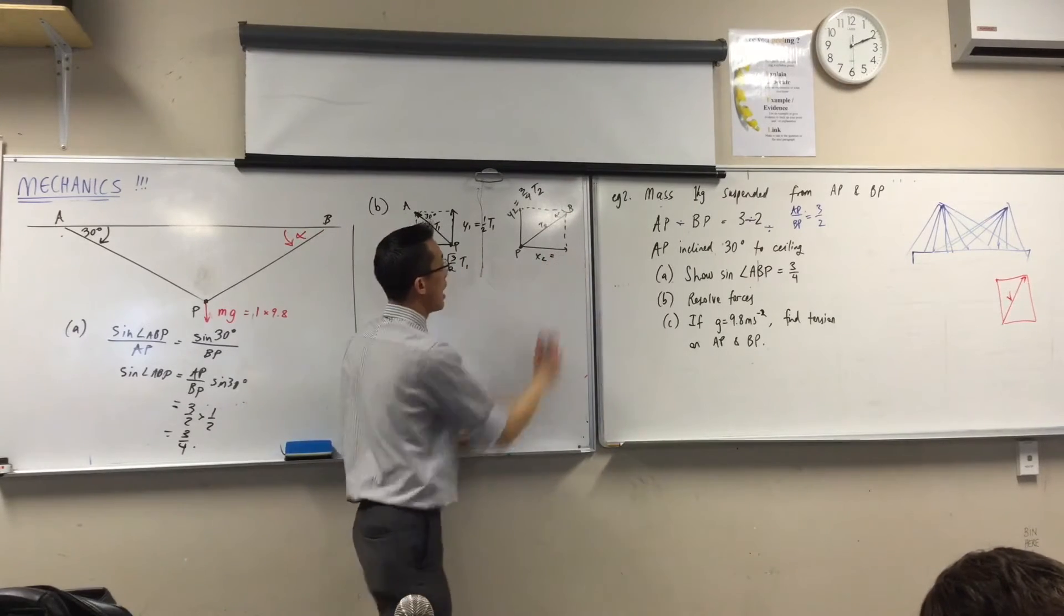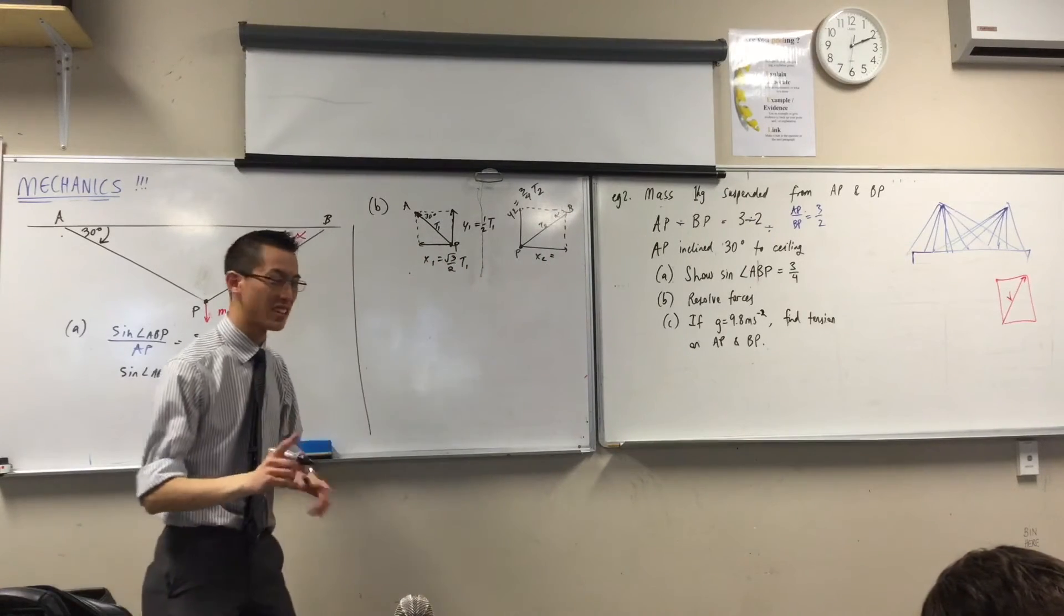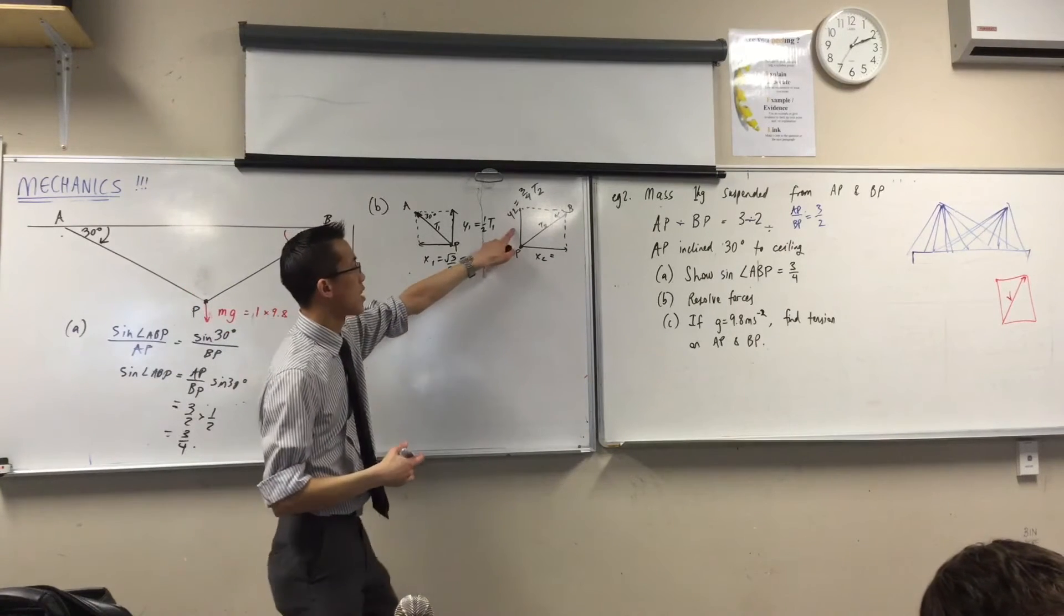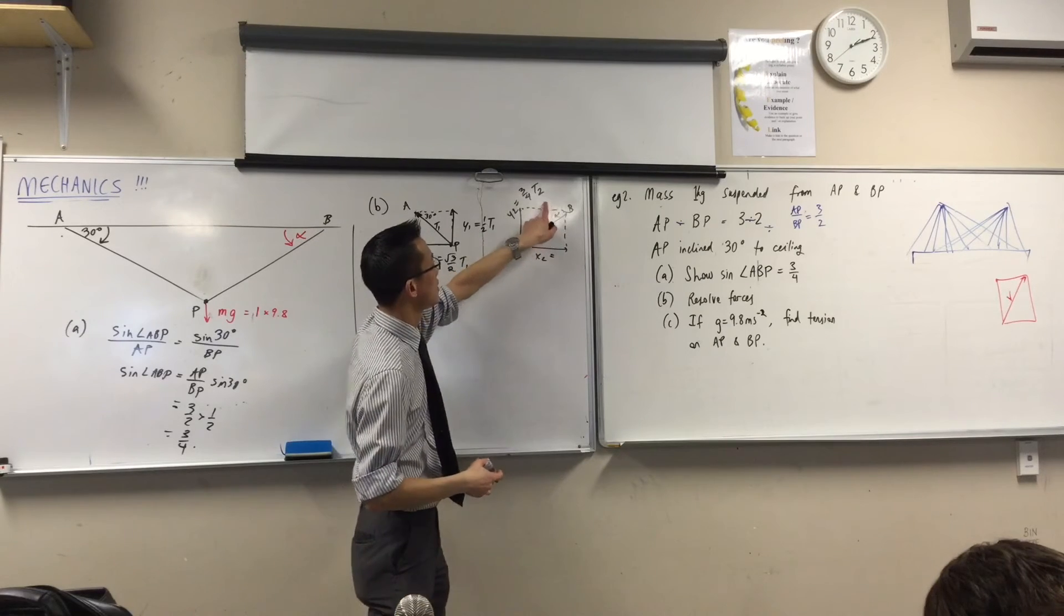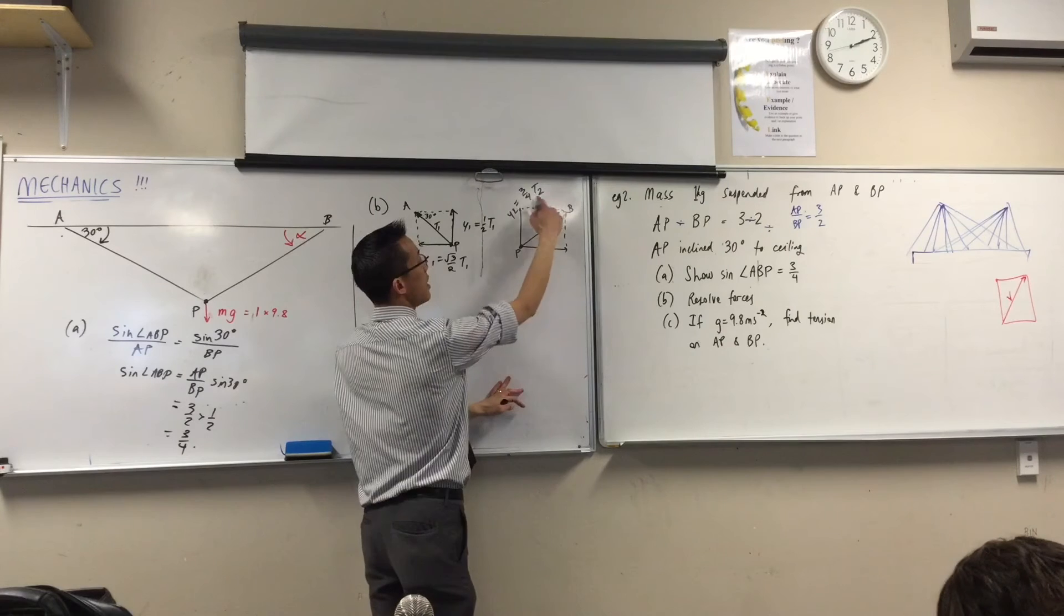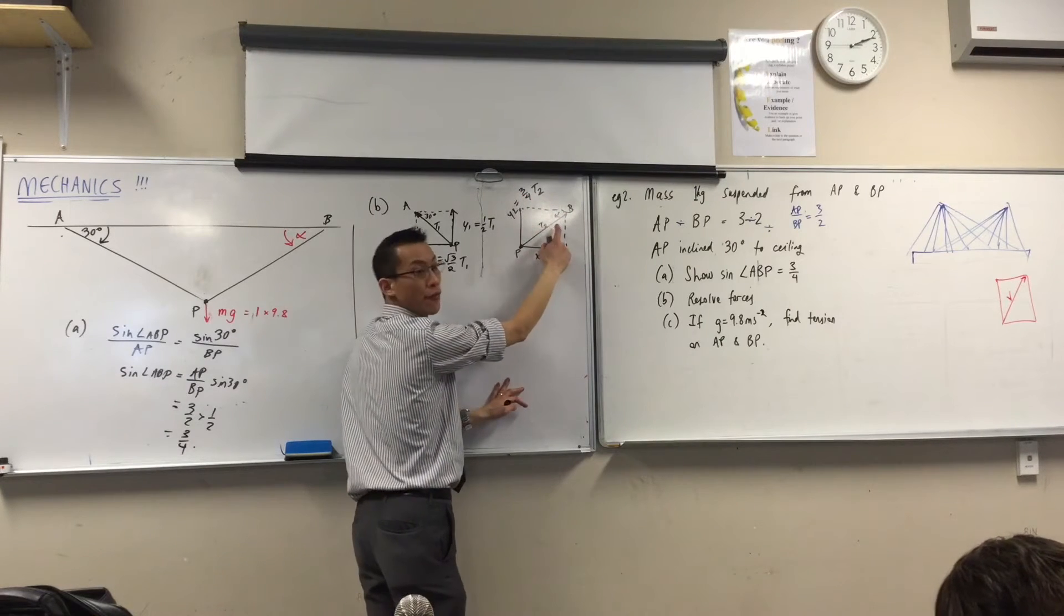In the same way I can do the horizontal one, but you need to think a little more because you don't know what the other side is. What is this side going to be if I've got... What is this side going to be? Root 7. It's going to be root 7.